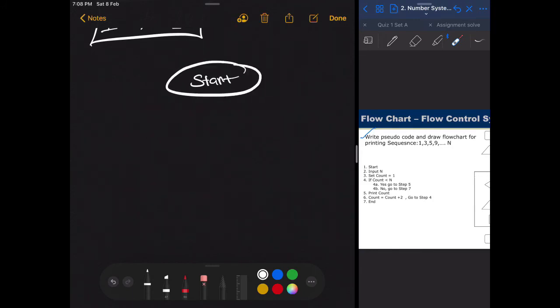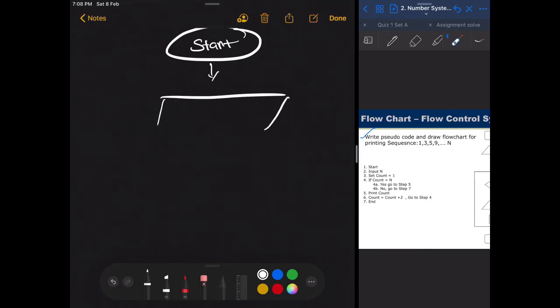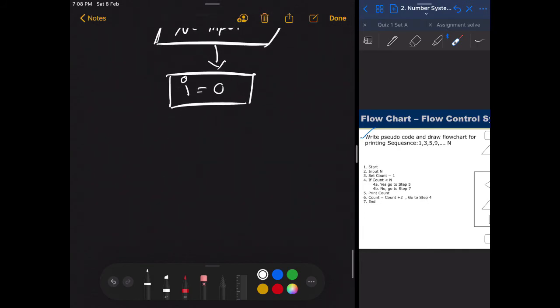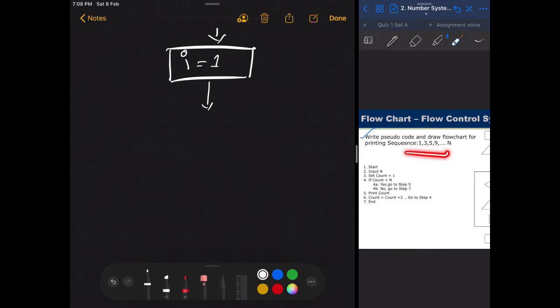So let's give this a shot. We definitely start with an oval, then go down. Then we need to initialize a value or we need to ask the user for the value of N, so N equals to input. Then we initialize a value. Value initializing is always a rectangle. And for this case, we are using i which starts from 1. Then remember, we have to go from 1 up till N, so we need a loop for this.